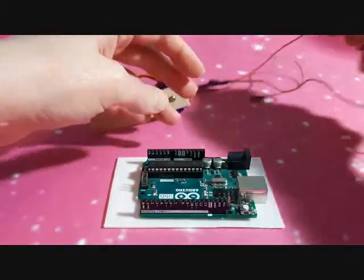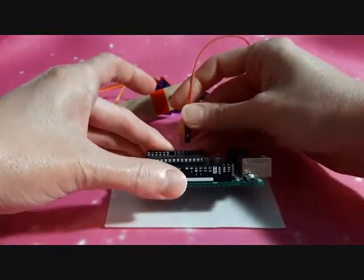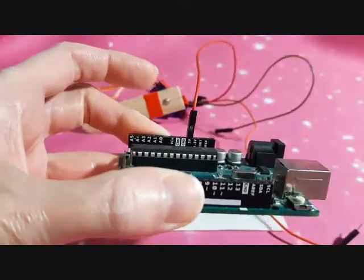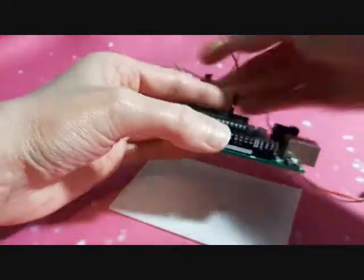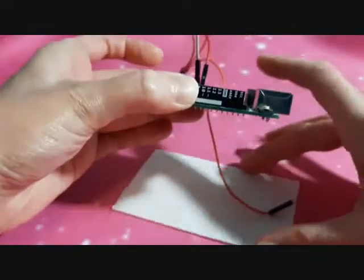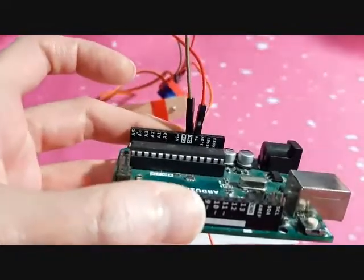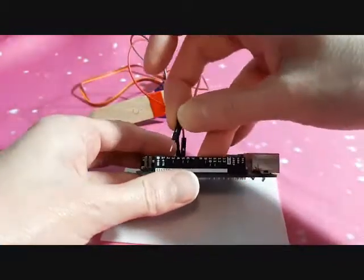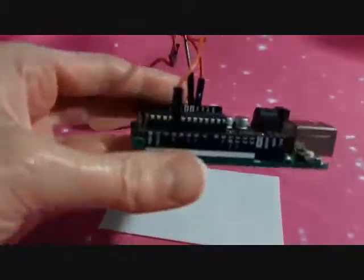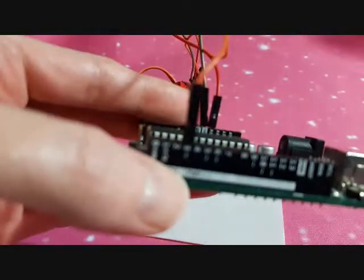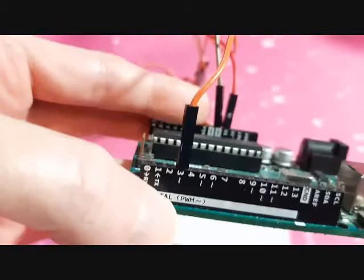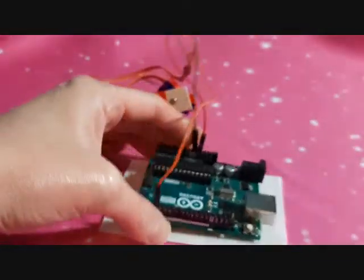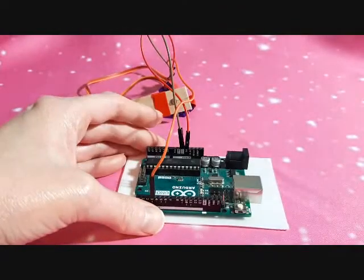Now I'm going to hook this into the Arduino. We're going to put the power to 5 volts, that's the red one, and the ground into the ground, and the signal into pin 3. This is what it should look like.